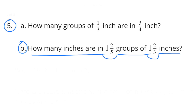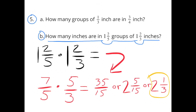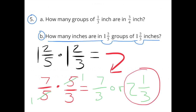Part b: How many inches are in one and two-fifths groups of one and two-thirds inches? One and two-fifths times one and two-thirds equals seven-fifths times five-thirds. Simplifying: five goes into five once, giving seven times one over one times three, which is seven-thirds, or two and one-third. There are two and one-third inches in one and two-fifths groups of one and two-thirds inches.